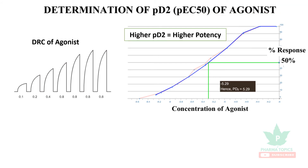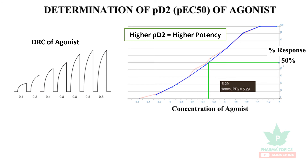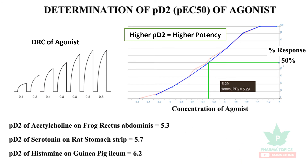The inference is: higher the PD2 value, higher is the potency. Let us see some examples. PD2 of acetylcholine on frog rectus abdominis was found to be 5.3. PD2 of serotonin on rat's stomach strip was found to be 5.7. And PD2 of histamine on guinea pig ileum was found to be 6.2.